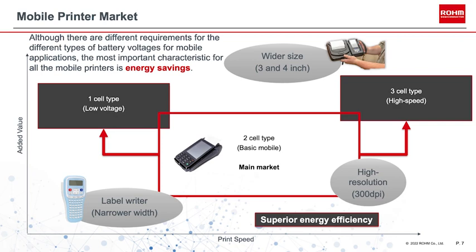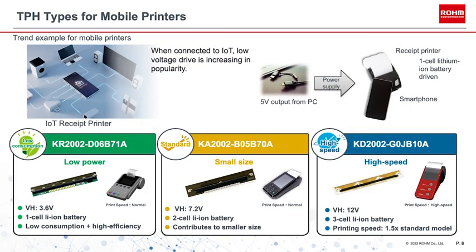There are two other growing trends in this sector. One is wider, three- and four-inch printers, and the second is high-resolution printers capable of printing at 300 dots per inch. With the spread of IoT, the demand for low-power receipt printers driven by one-cell lithium-ion batteries is increasing. Two-cell type printers need a boost circuit to charge from a five-volt USB supply, so there is demand for a one-cell thermal printhead that does not require a boost circuit for more efficient and easy charging.